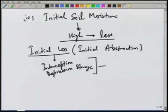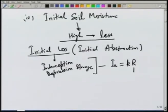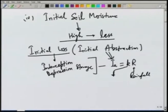Generally, we say the initial abstraction Ia is equal to k times the amount of rainfall, where k is some fraction depending on catchment characteristics, typically obtained by observing the conditions.